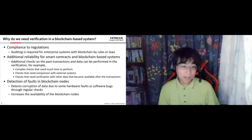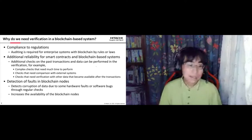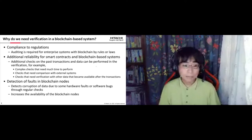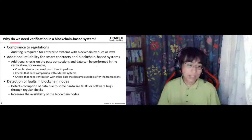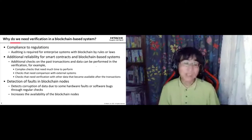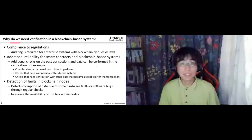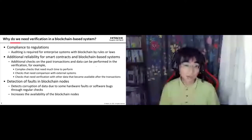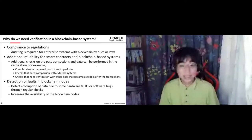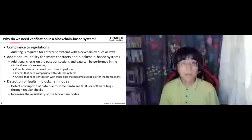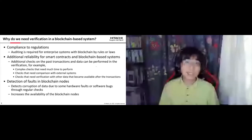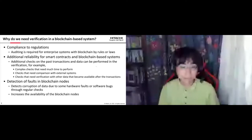If such corruption occurs, regularly checking the contents of the ledger will detect it, and then we can apply some fix on that corruption, increasing the availability of the blockchain nodes or the blockchain network the peer is participating in.